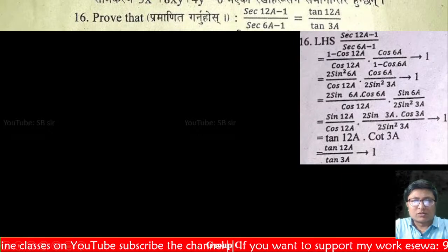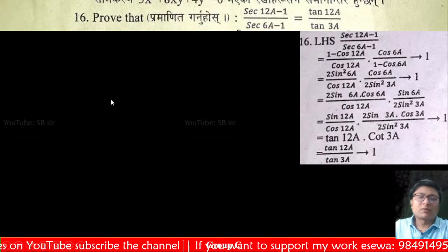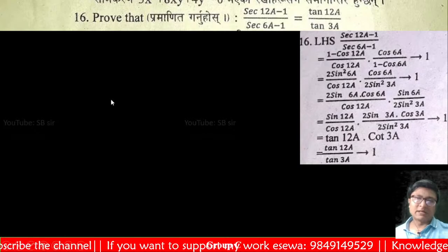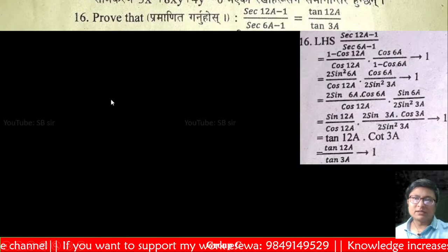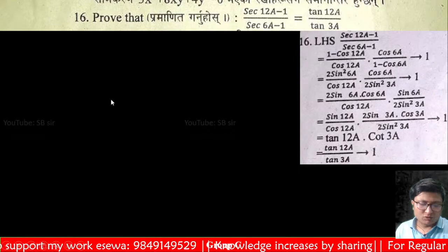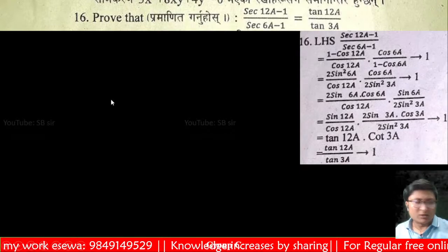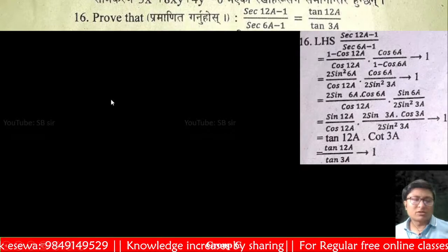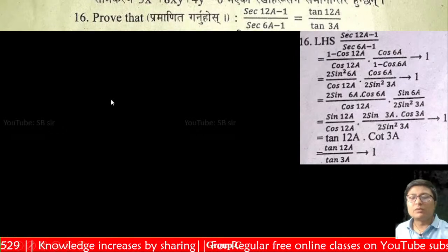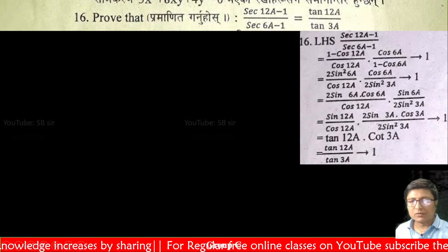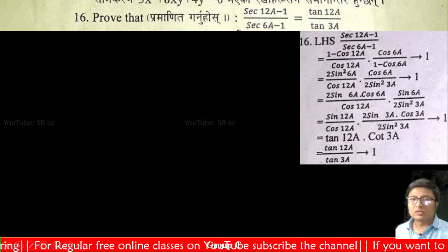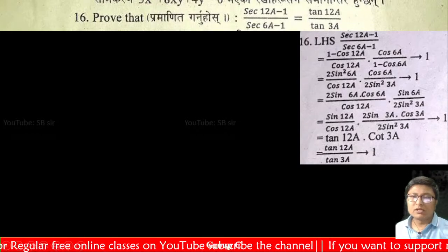So let's discuss this question of trigonometry. Prove that sec 2a minus 1 divided by sec 6a minus 1 equals tan 2a upon tan 3a. This question is a trigonometric equation.